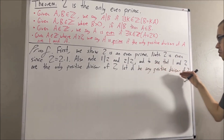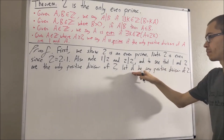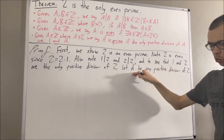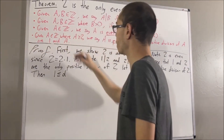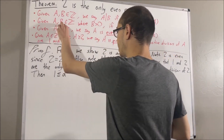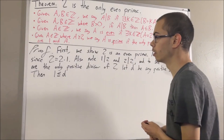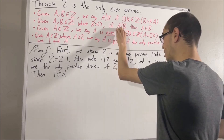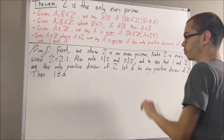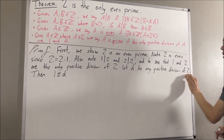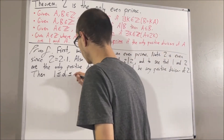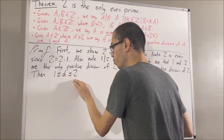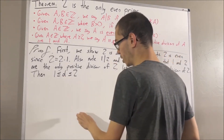So let d be any positive divisor of 2. Our goal is to show that d must be equal to either 1 or 2. Well, since d is positive, we know that d is greater than or equal to 1. However, from our second fact, if we take a and b to be d and 2 respectively, we know that 2 is greater than 0. So it follows that if d is a divisor of 2, then d is less than or equal to 2. Since d is indeed a divisor of 2, d must be less than or equal to 2. So d is between 1 and 2. But the only integers between 1 and 2 are 1 and 2, so d must be equal to either 1 or 2.